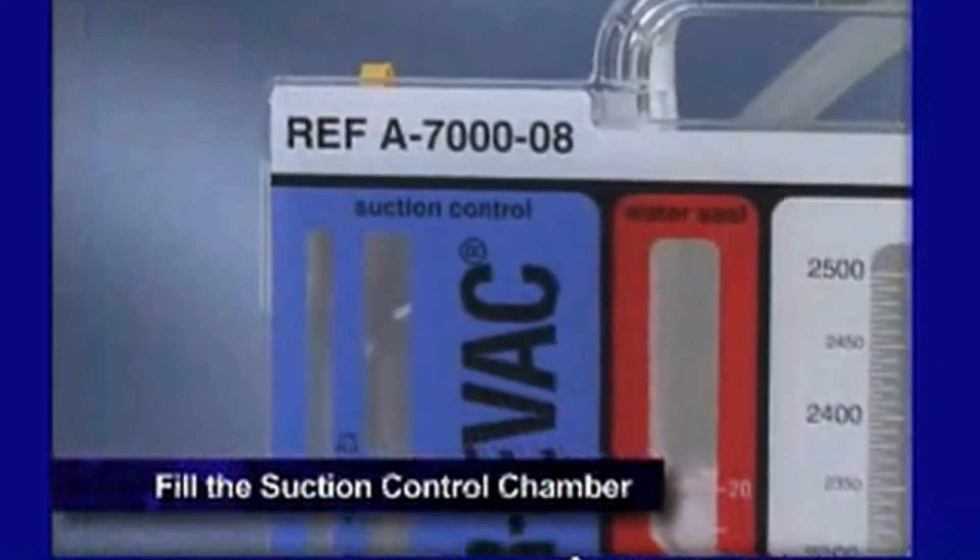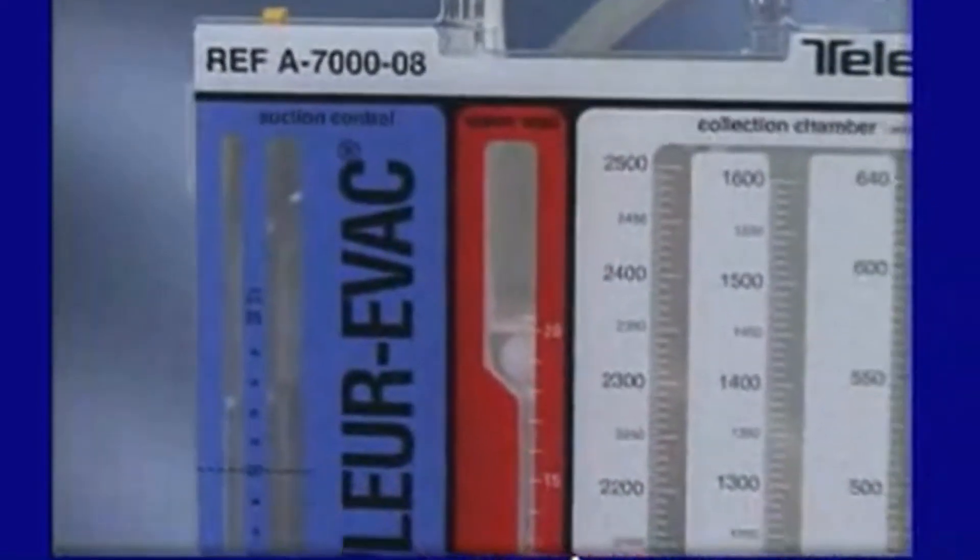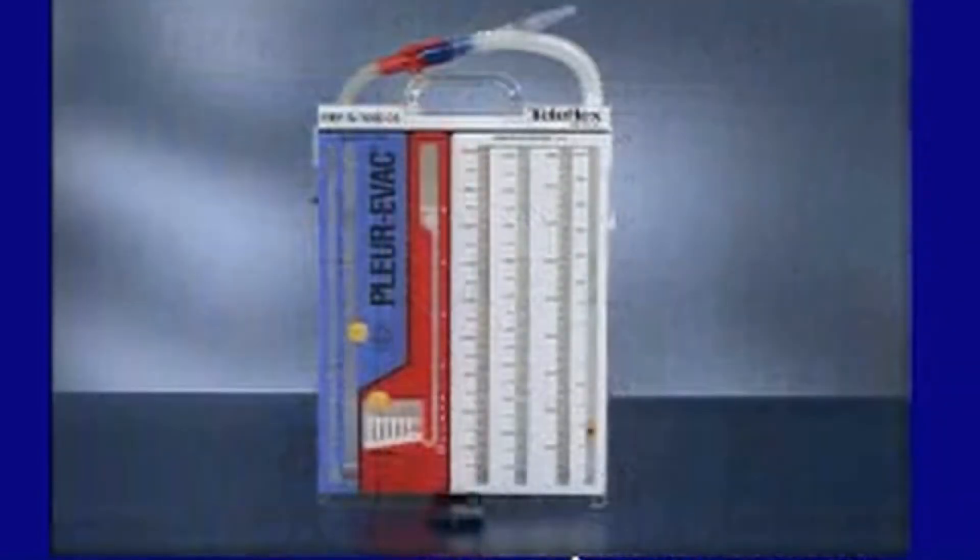Second is filling the suction control chamber. This is the suction control chamber. With the Plurivac A7000, water is used to operate the suction control.